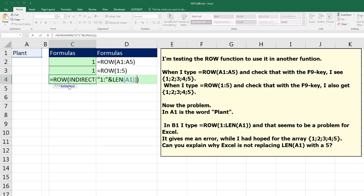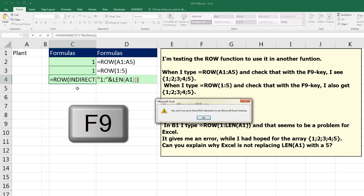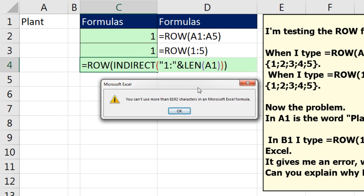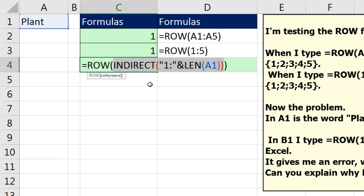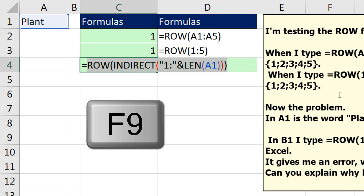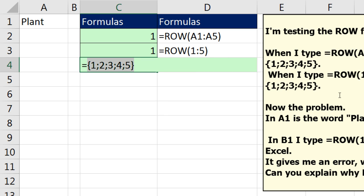So when I close parentheses on INDIRECT and highlight this, F9. Well, that's not going to work in Edit mode, because I can't display more than 8,192 characters. But ROW will understand it. If I were to highlight this whole thing and hit F9, there is our array of sequential numbers from 1 to 5, based on the length of whatever I put here. Control-Z. And now I'm going to hit Enter.